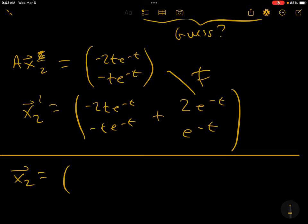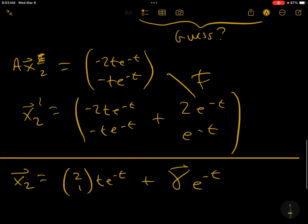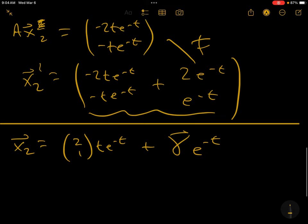So the guess we're going to use here is the vector zeta times t e to the minus t, plus some other vector, gamma, e to the minus t. That way, it's going to match this vector here. And so the question is, how do you find gamma?